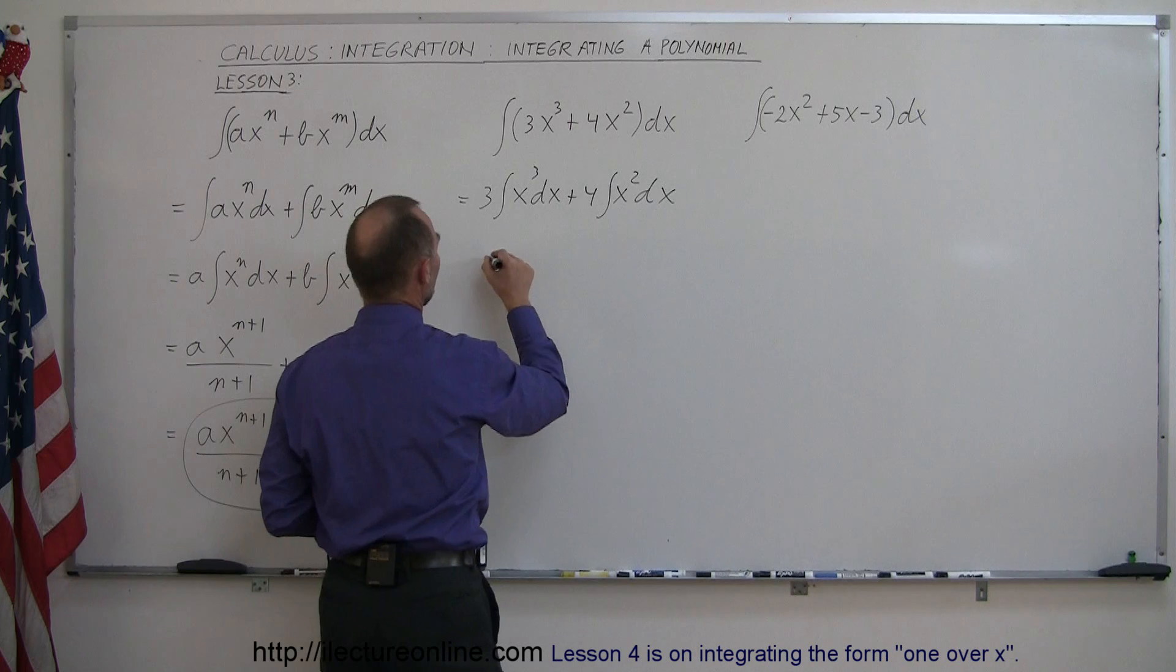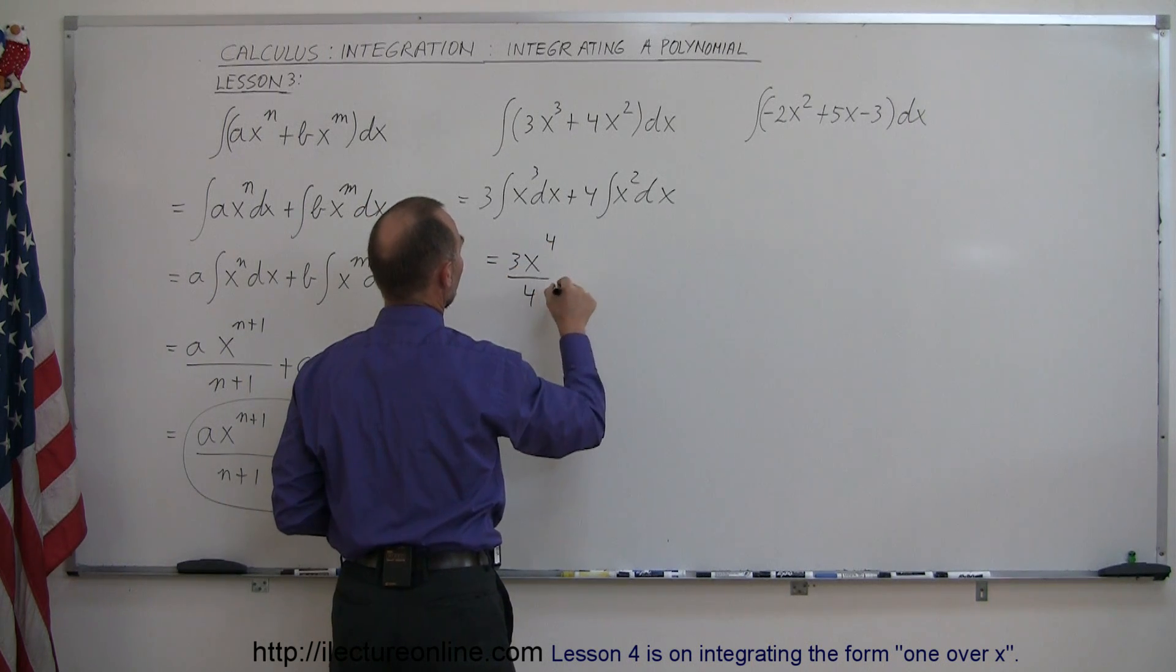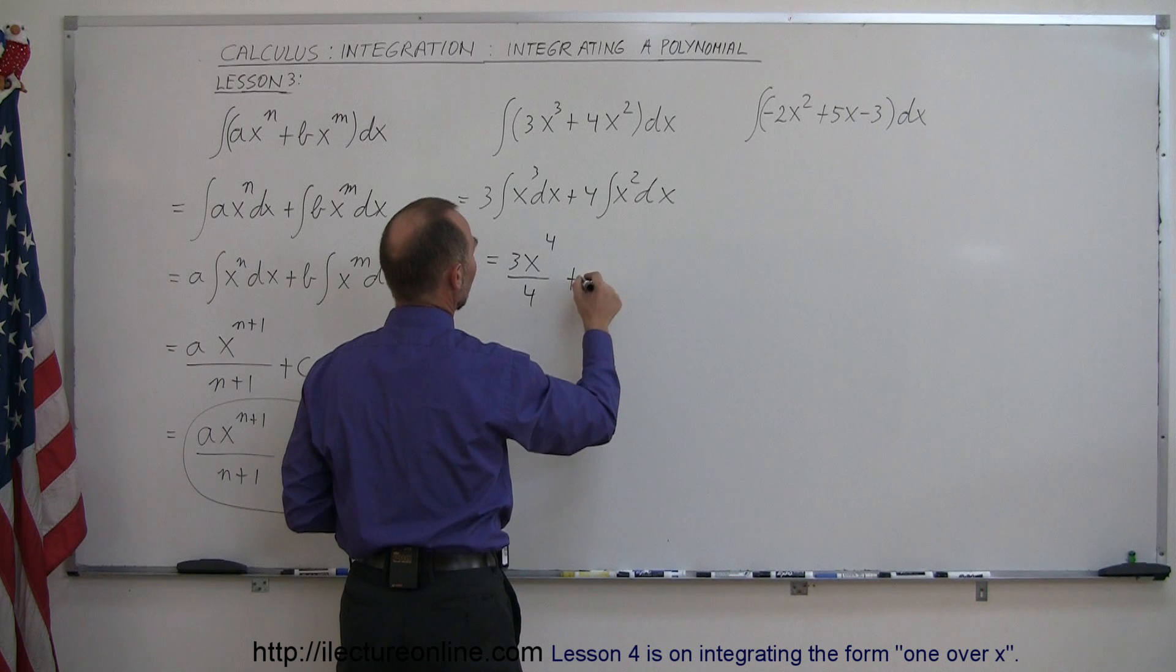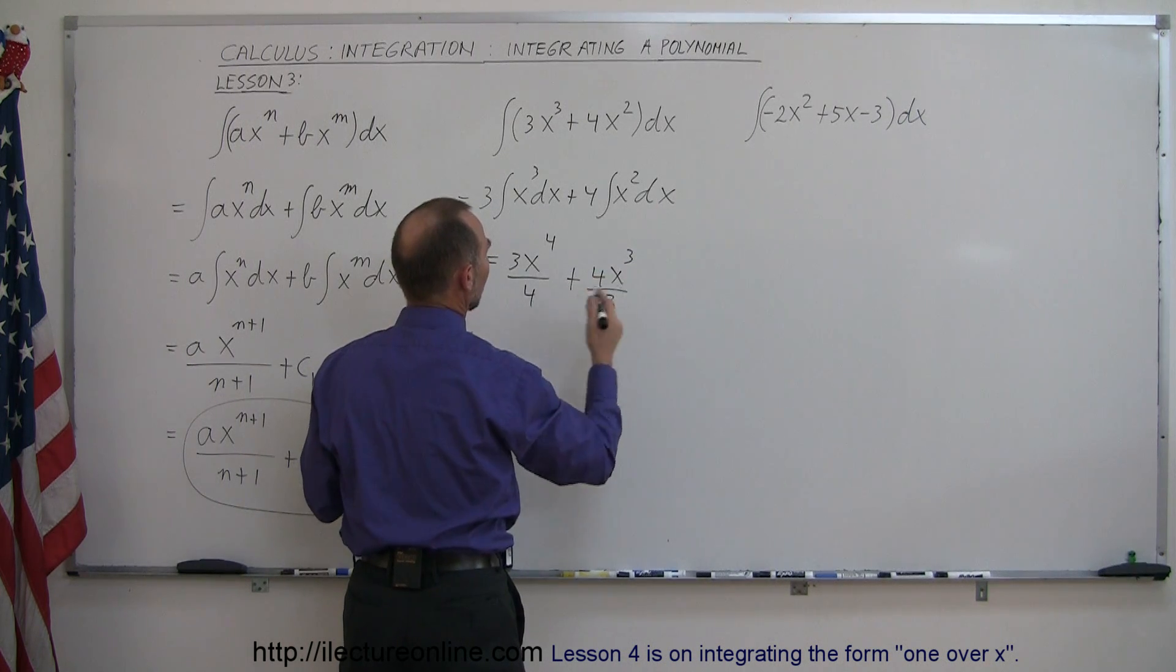Now we can integrate. This is equal to 3x to the fourth power divided by 4, plus the constant of integration, plus 4x cubed over 3,